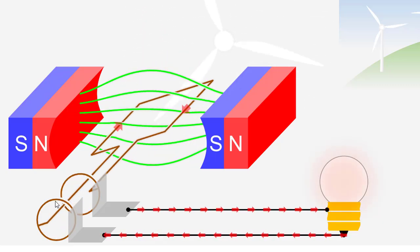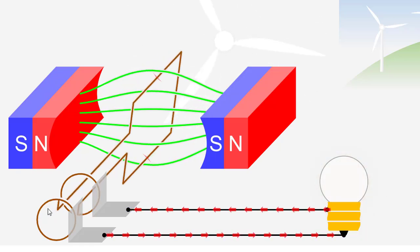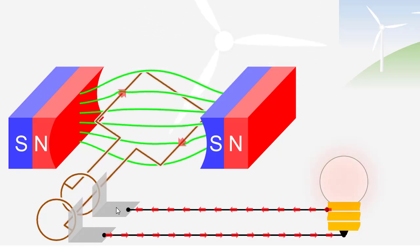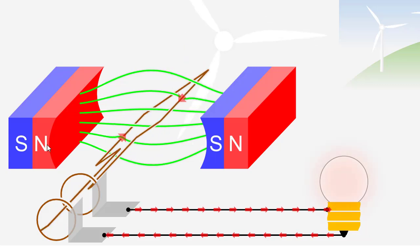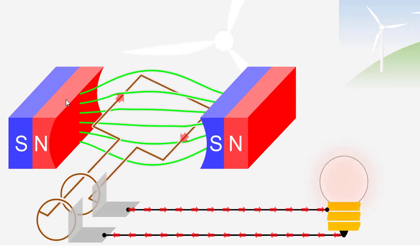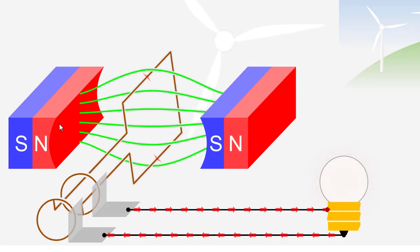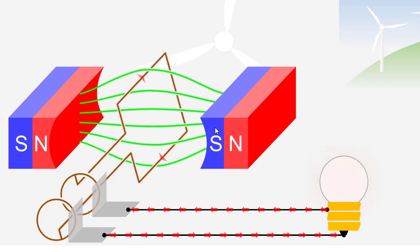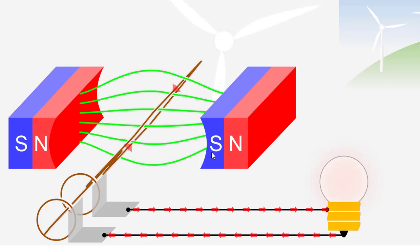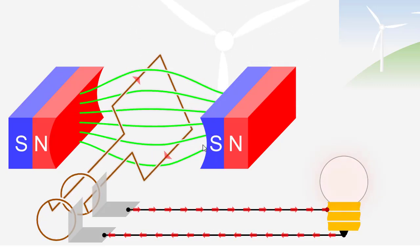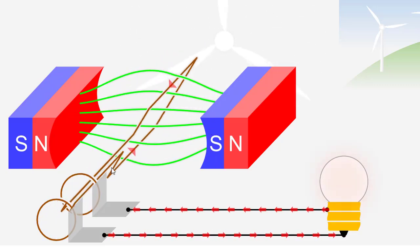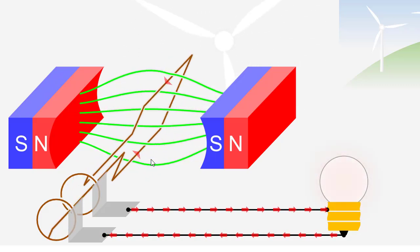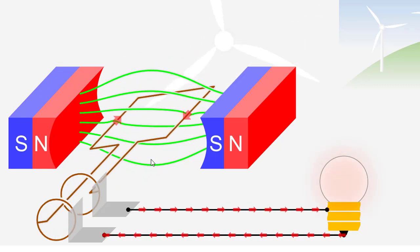These two are the slip rings and these two are the brushes. One magnet is on the north pole side and the second magnet is on the south pole side. Now this conductor is made from aluminum or copper.